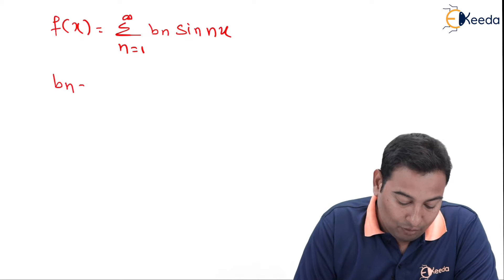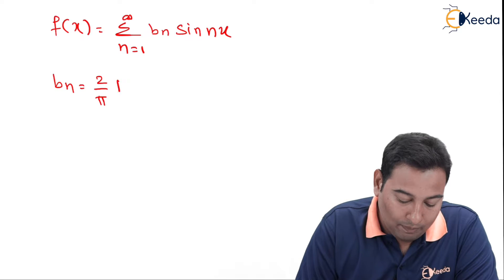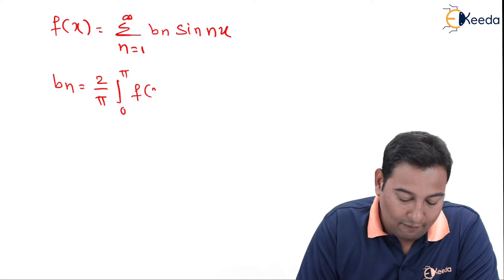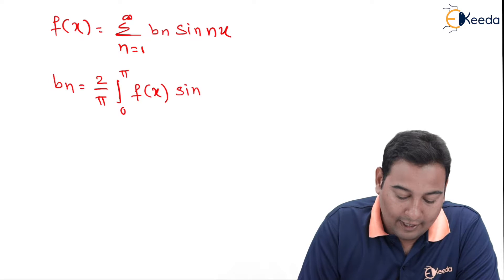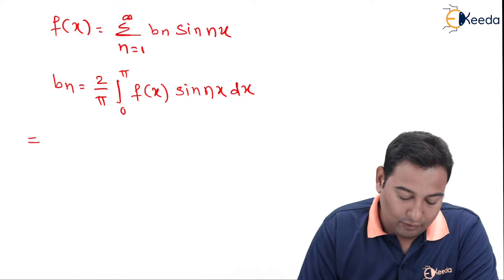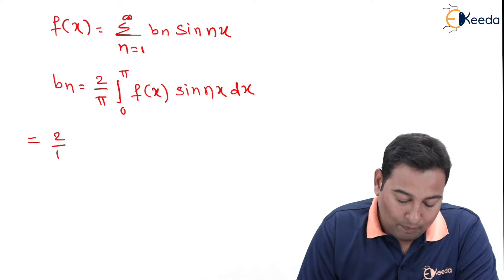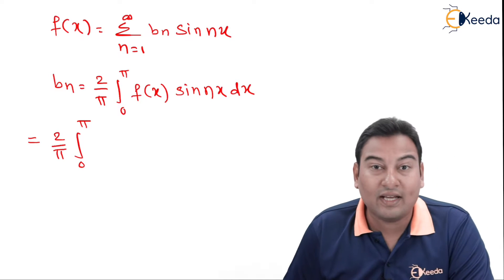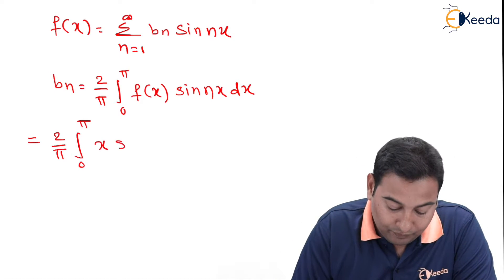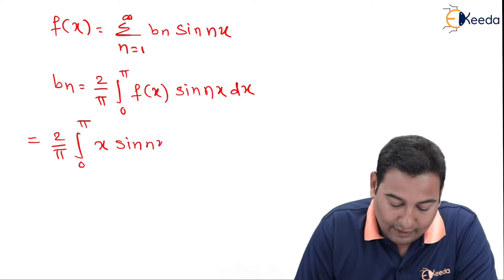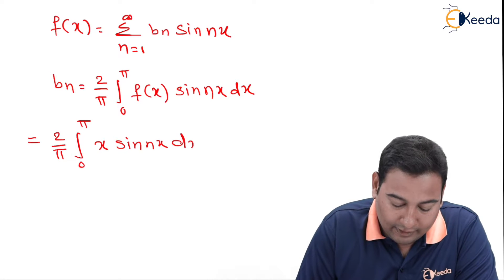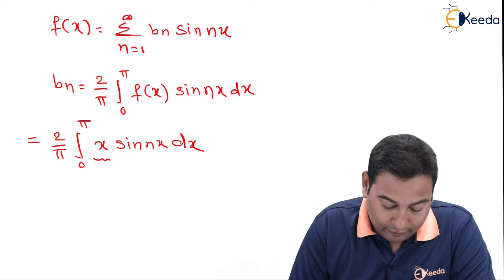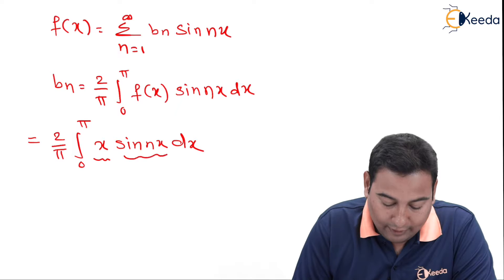The formula for b_n is 2 upon pi, integral from 0 to pi of f of x sin(nx) dx. So that is 2 upon pi, integral from 0 to pi — here f of x is x — so x into sin(nx) dx. Let's integrate: this is u and this is v.